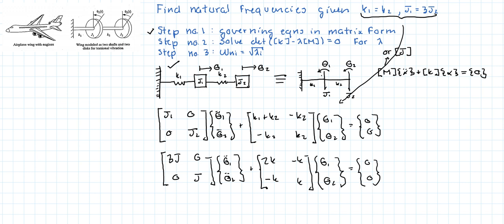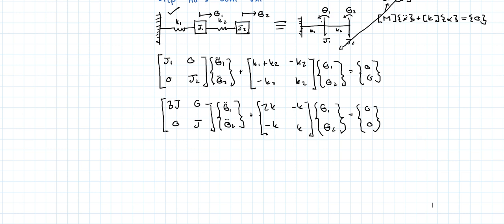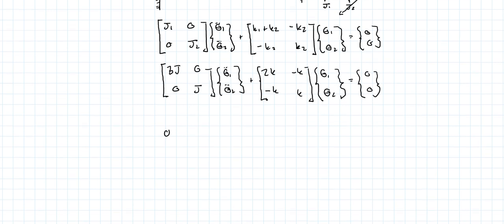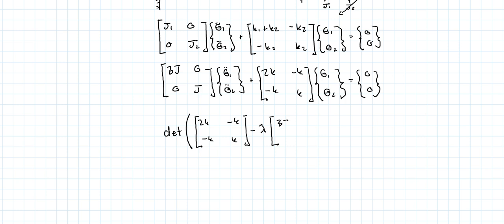We move on to step two, in which we calculate the determinant of the stiffness matrix minus lambda times the inertia matrix — that is, det([2K - 3Jλ, -K; -K, K - Jλ]) — and set that equal to zero.